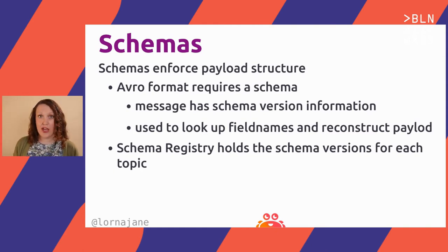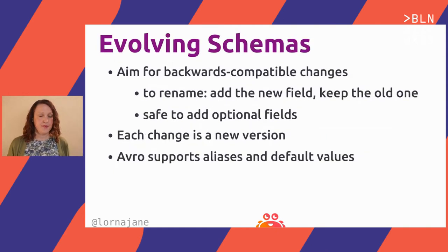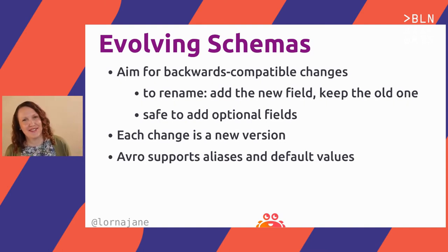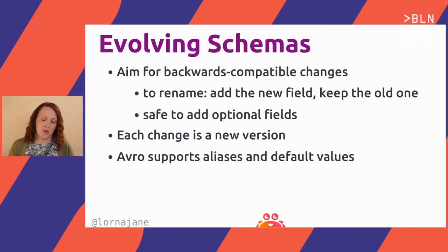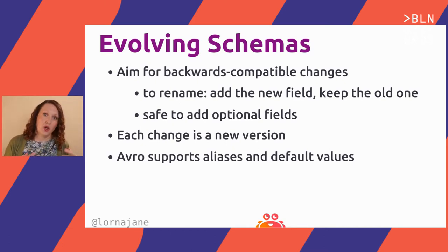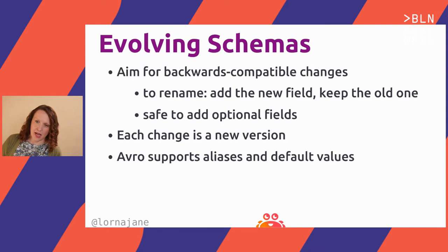For the schema registry, I'll be using Karapace — an open source schema registry maintained by Ivan, though Confluent and API Curio are other options. When it comes to making changes to schemas, the best advice is: don't. However, things happen. So aim for backwards-compatible changes: rename fields, add optional fields, but avoid breaking changes. Each compatible change becomes a new version registered with the schema registry. Avro makes this easier by supporting both aliases and default values.